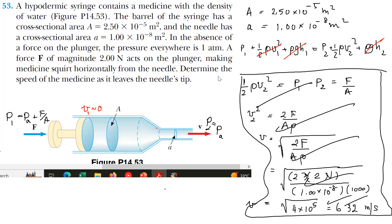Let's get back to the same problem as before. A needle and a syringe is considered. A syringe contains a medicine with density of water. The barrel has a cross-section area of 2.5 times 10 to the minus 5 square meters, and the needle has a cross-section area of 1 times 10 to the minus 8 square meters. A force of negative 2 newtons acts on the plunger making medicine squirt horizontally from the needle. This means the speed of medicine as it leaves the needle.